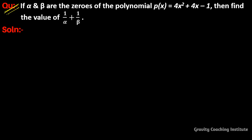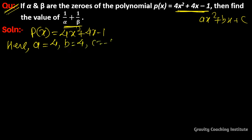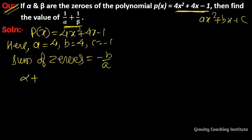Question: if alpha and beta are the zeros of polynomial p(x) = 4x² + 4x - 1, then find the value of 1/alpha + 1/beta. So here p(x) = 4x² + 4x - 1. Comparing with standard quadratic polynomial ax² + bx + c, we get a = 4, b = 4, and c = -1. Now, sum of zeros = -b/a, so alpha + beta = -b/a.